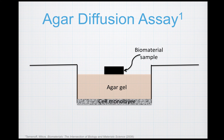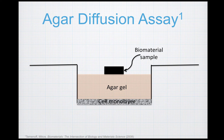The agar diffusion assay is similar to the direct contact assay, except the cells in a monolayer at the bottom of the plate are covered in a porous agar gel. Agar is derived from red algae and looks and feels almost exactly like gelatin or jello. Your biomaterial is placed on top of the agar gel, so it won't squish your cells if it's heavy. The agar is infused with cell culture media to keep the cells alive, and viability is determined by examining the cells under the microscope and looking at their morphology.